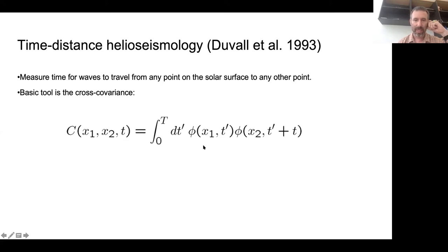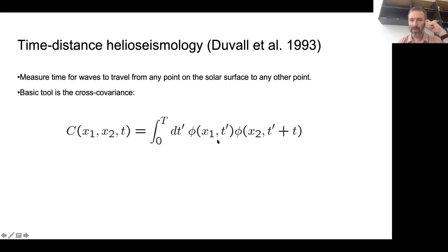This is how you compute it from the observations. Think of phi as your data - for example, your Doppler velocity. It's just a cross-covariance between the time series of the Doppler velocity at X1 and the time series of the Doppler velocity at X2.